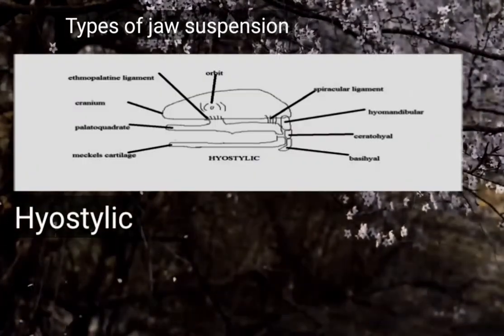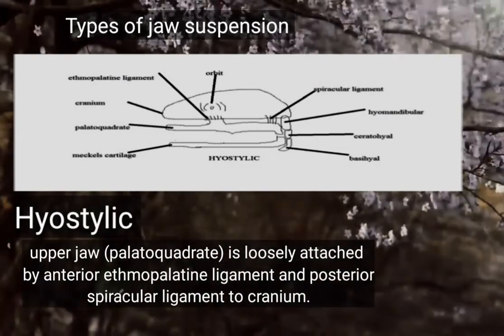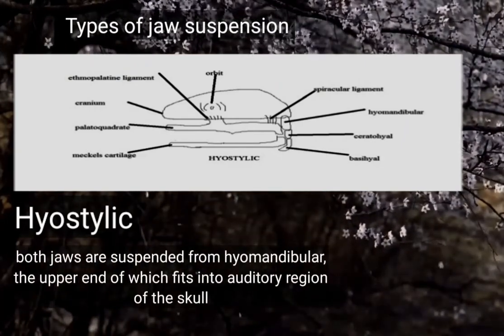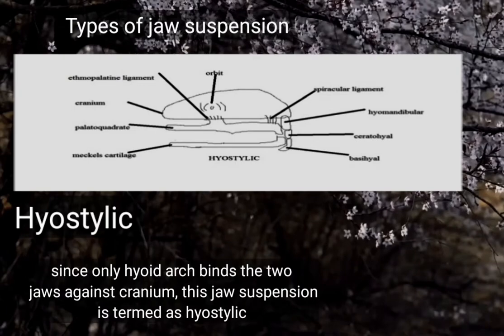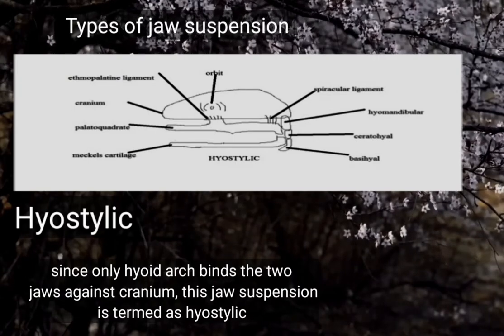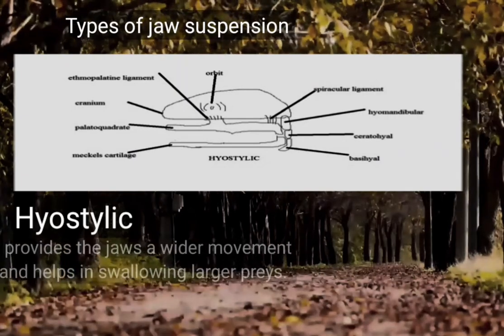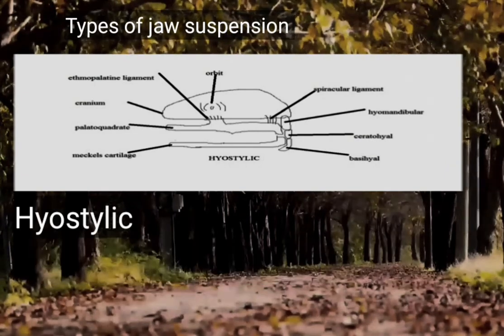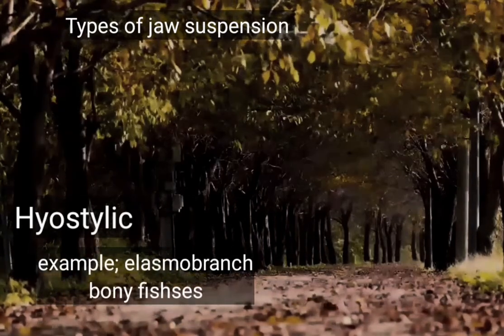The third type of jaw suspension is hyostylic. In this type, the upper jaw is loosely attached by an anterior ethmopalatine ligament and a posterior spiracular ligament to the cranium. Both jaws are suspended from the hyomandibula, the upper end of which fits into the auditory region of the skull. Since only the hyoid arc binds the two jaws against the cranium, this is termed hyostylic. This arrangement provides wider jaw movement and helps in swallowing larger prey. Hyostylic jaw suspension is mainly found in elasmobranchs and bony fishes.